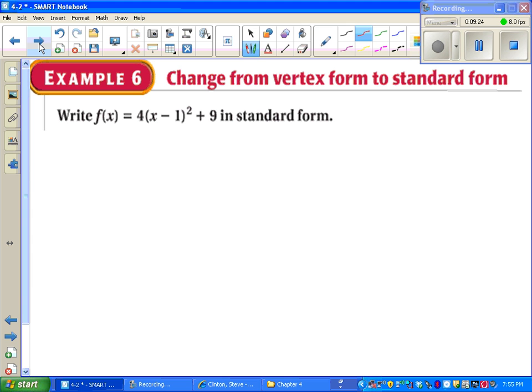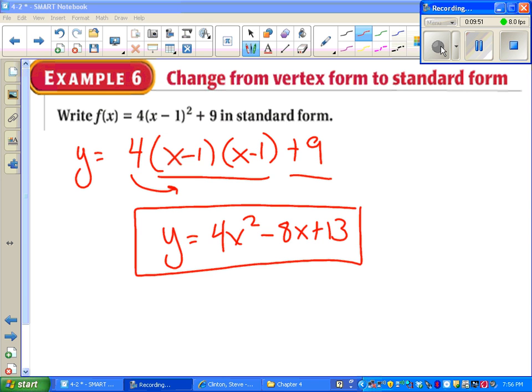One more, we're going to go from vertex form to standard form. Pretty much the same idea. Actually, a little bit harder just because of the way it's set up. But if you start like this, the rest of it should come together pretty nicely. So multiply these guys together, then distribute the 4, and then add the 9. Once you do all that, see if you get the same result I get. And that's it.